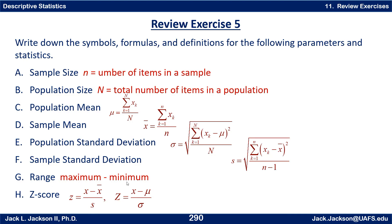The range is simply the maximum minus the minimum. The z-score is the measurement x minus the mean, divided by the standard deviation — there is both a sample version and a population version. Come on back for the next video — we'll do a few more review exercises.